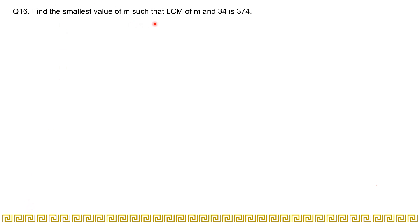Find the smallest value of m such that LCM of m and 34 is 374. So we have to find the smallest value, that is m is the unknown value, such that if we find the LCM of that m with 34, it should give us 374. You can write it like this: LCM of m and 34 is equal to 374. Now you have to find this unknown number.